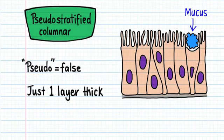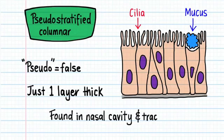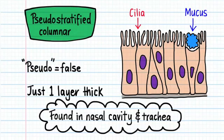Pseudo-stratified columnar epithelium secretes a sticky mucus and has cilia on its surface. It's found in the nasal cavity and trachea. The mucus traps dust in the air, preventing it from getting to your lungs. And cilia move the dust and mucus towards your throat, where it's swallowed.